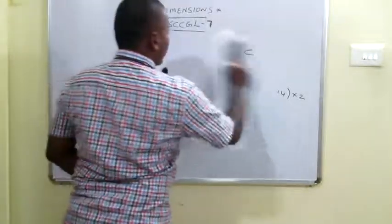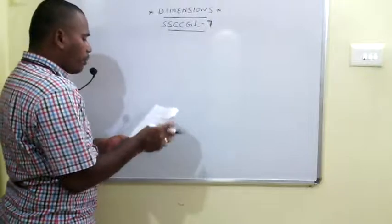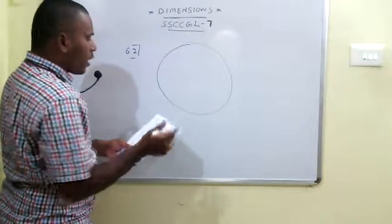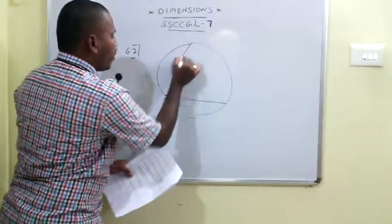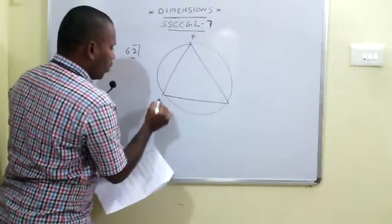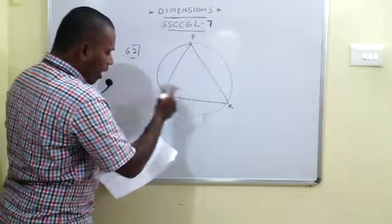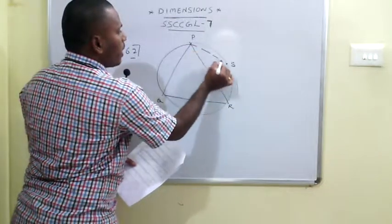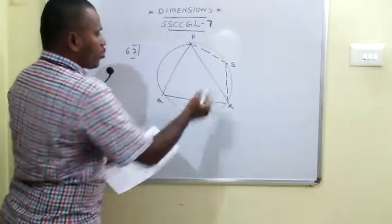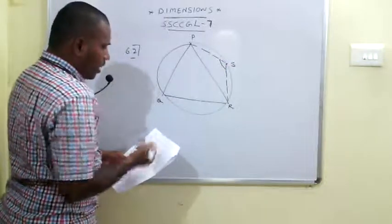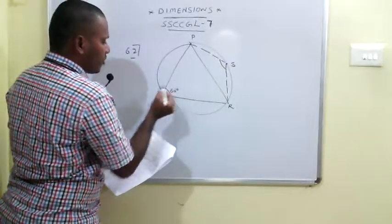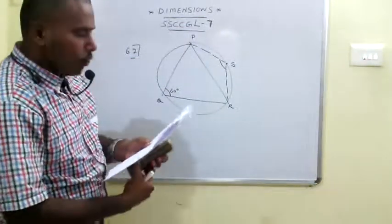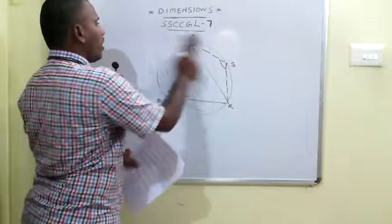The 62nd problem: PQRS is a cyclic quadrilateral where PQR is an equilateral triangle and S is a point on the circle forming the quadrilateral. We need to calculate angle RSP. Since PQR is equilateral, angle PQR = 60 degrees. The opposite angle in a cyclic quadrilateral sums to 180 degrees, so angle RSP = 180 - 60 = 120 degrees.